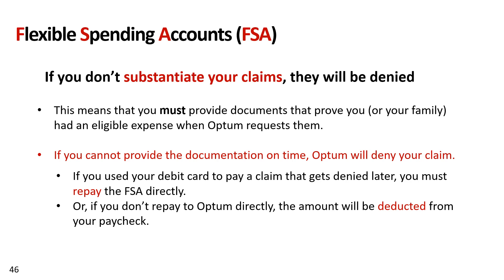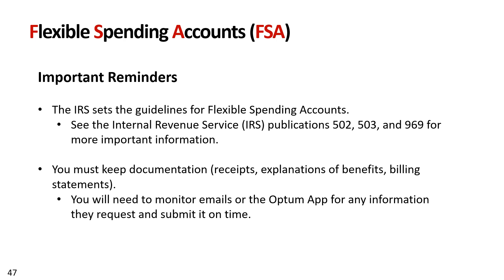If you enroll in an FSA, know that if you don't substantiate your claims, they will be denied. You must provide documents proving you or your family had an eligible expense when Optum requests them. If you cannot provide documentation on time, Optum will deny your claim. If you used your debit card to pay a claim that gets denied, you must repay the FSA directly, or the amount will be deducted from your paycheck. The IRS sets FSA guidelines; keep documentation including receipts, explanation of benefits, and billing statements. Monitor emails or the Optum app for requests and submit information on time.